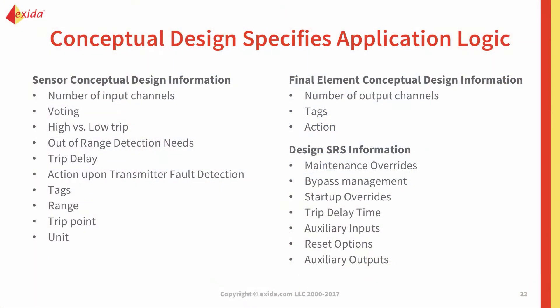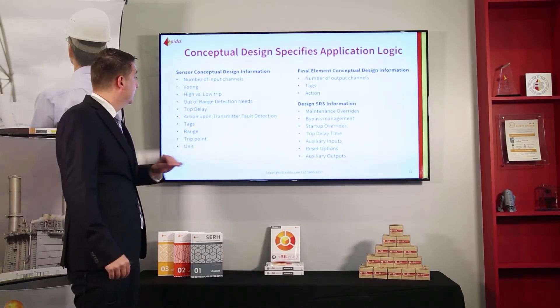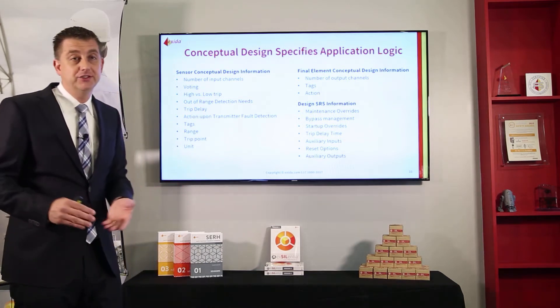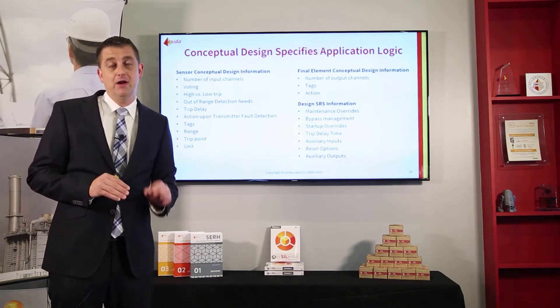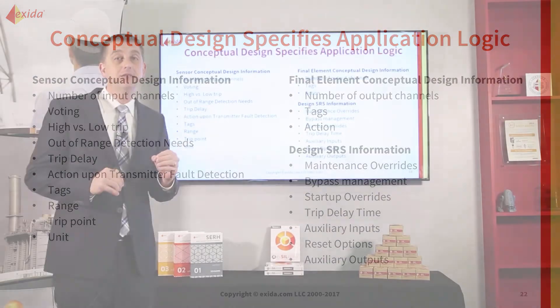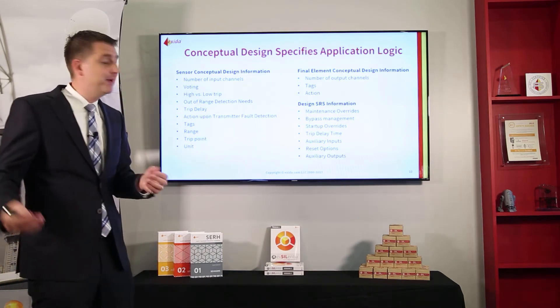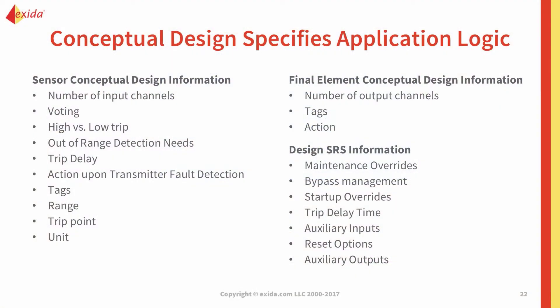There's no manual interaction needed. There are many parameters specified in the conceptual design that impact the application logic: number of inputs, voting between those inputs, high trip vs. low trip selection, out-of-range detection, and transmitter fault handling. Most transmitters use a 3.6 or 3.75 lower end and a 21.5 upper end to indicate a fault — you configure whether that counts as an automatic vote for trip or a bypass. There's also a trip delay, tags, ranges, trip points, and units of measure.